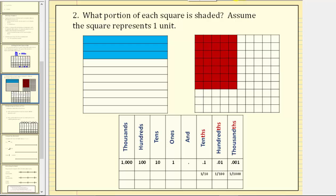For number two, what portion of each square is shaded? Assume the square represents one unit. For this unit, it's cut or partitioned into 10 equally sized parts or pieces, three of which are shaded, which means three-tenths of the square is shaded.